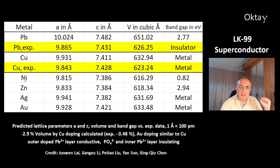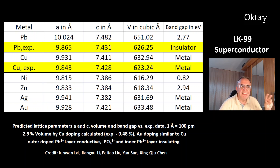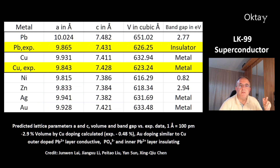The model was also applied to other dopants. With nickel and zinc you don't get a superconductor — there is still a band gap. But with silver and gold there is a similar effect, and especially gold has an effect very close to that of the superconductor LK99. However, their calculations showed a volume reduction of 2.9%, while the experimental value was about 0.5%. According to this model, only the outer doped lead layer is conductive; the inner phosphide layer and inner lead layer are insulating.